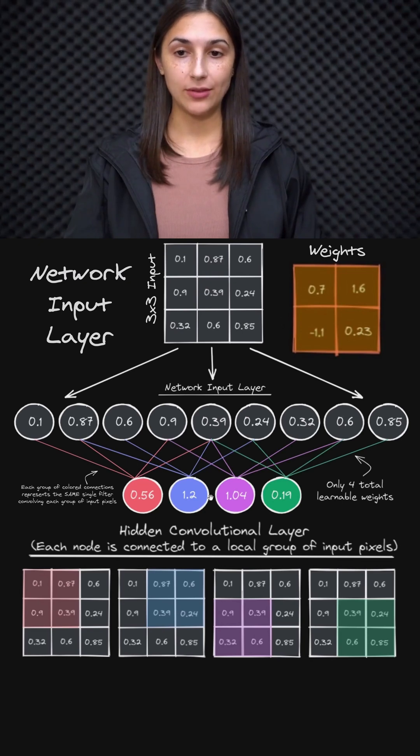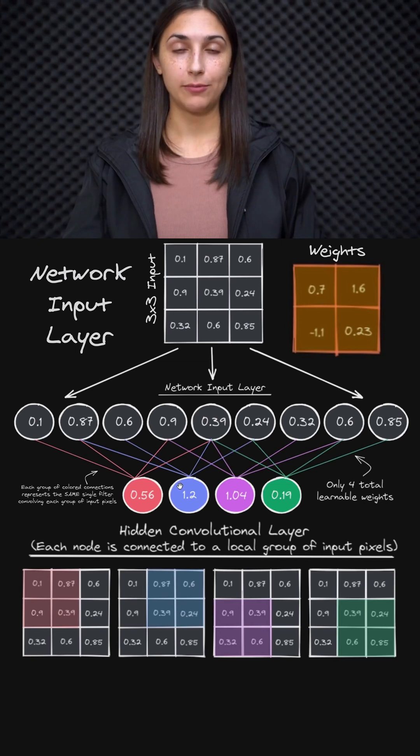These values here, these outputs from these nodes, are actually the output of our convolutional filter on these groups of pixels.